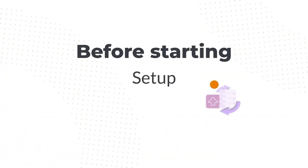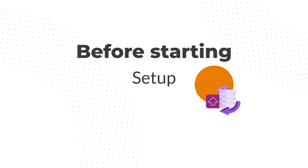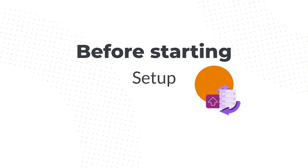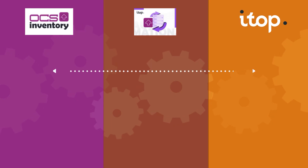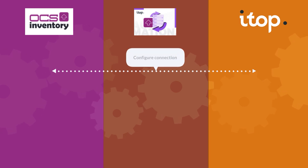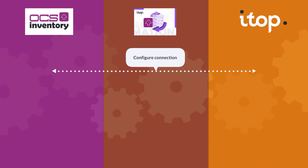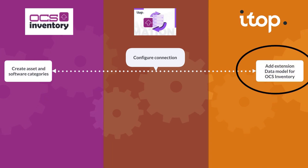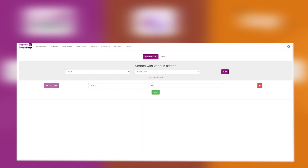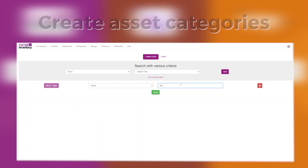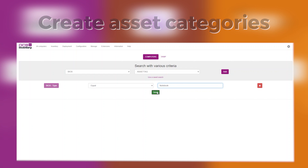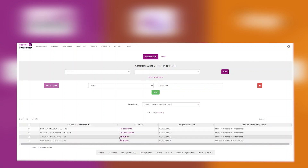Now let's deep dive into the setup. Before starting, you have first to configure the Data Collector connection with OCSNG and ITOP and set the list of data and categories for synchronization. Then add the extension data model for OCS Inventory, which helps you create new classes in ITOP for OCS assets and software. In OCSNG, you identify devices and create asset categories.